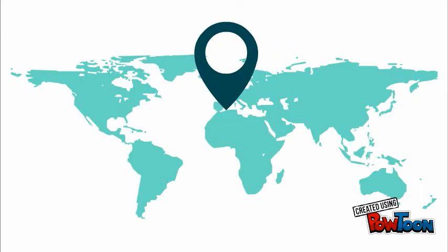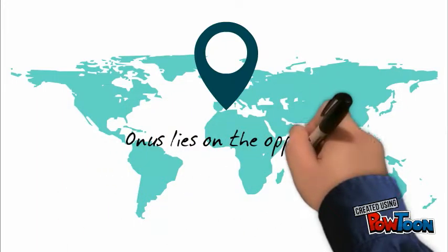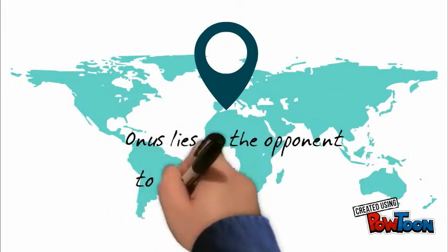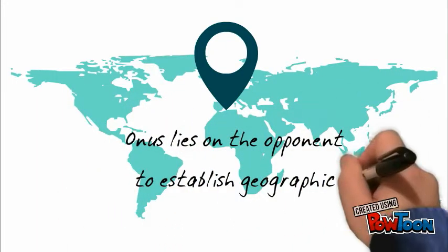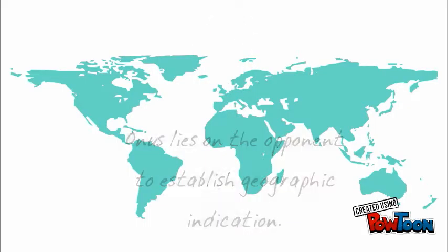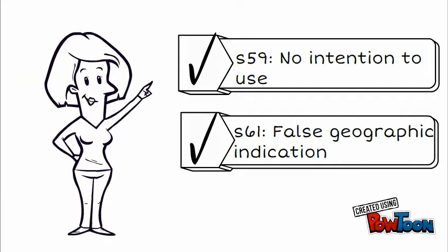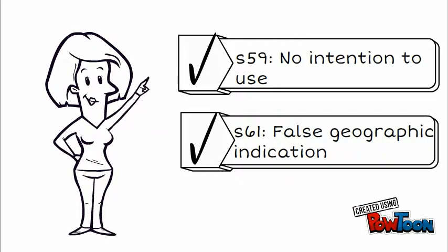The onus relies on the applicant opposing the trademark to put forward evidence as to why Champagne is a geographic indication. In summary, a trademark application may be opposed on the grounds of no intention to use or false geographic indication.